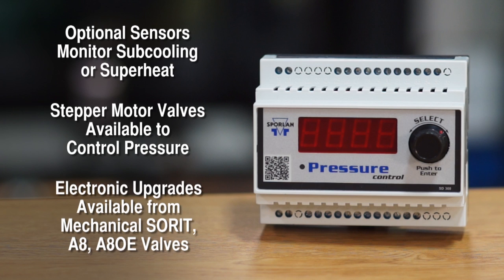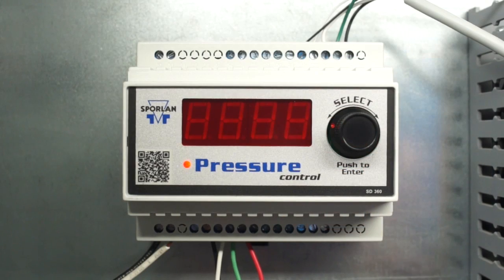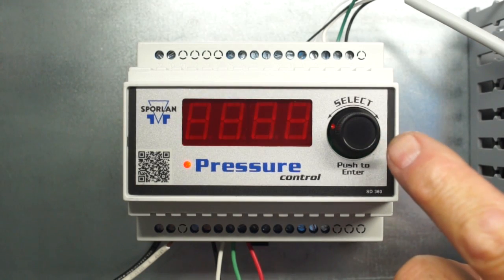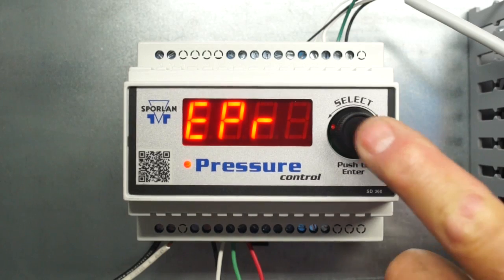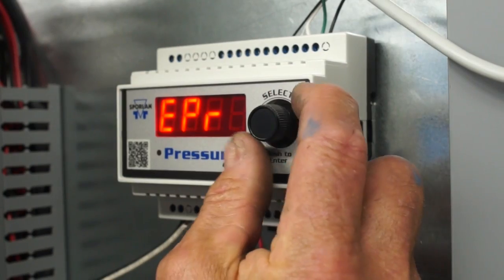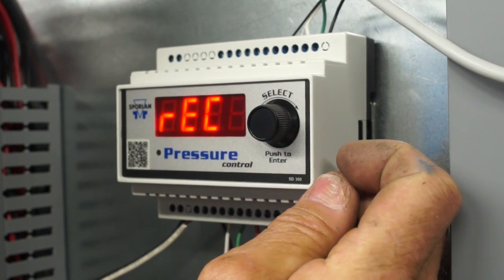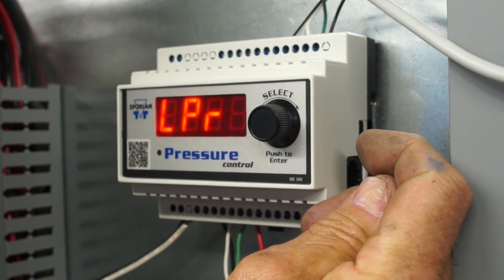Electronic upgrade kits are also available for mechanical Soret, A8 and A8OE valves. Menu operation is input via an easy to use select knob with a large four-digit LED display. It has Modbus and BACnet communications options that are both standard for communication protocol for control systems in the industry.